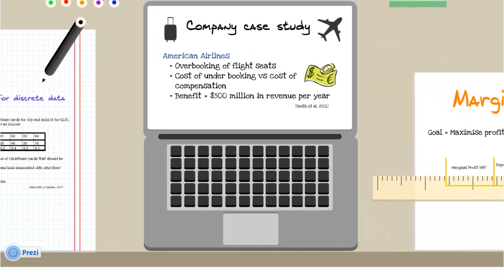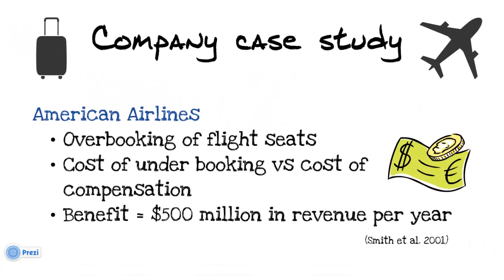Now we'll move on to a company case study. American Airlines has been using the single period inventory model, or in their terms yield management, since 1985. It is common for people to cancel flight reservations for a variety of reasons, so American Airlines overbook flights using probabilities. The cost of underestimating the number of cancellations is the revenue lost due to an empty seat on a flight. The cost of overestimating cancellations is the compensation they must give to customers such as free flights or cash payments which are given when passengers are unable to board the flight they booked.